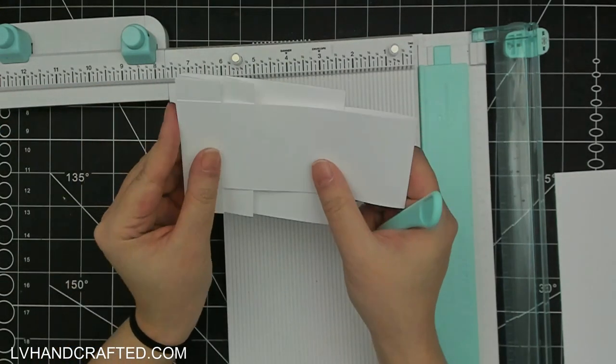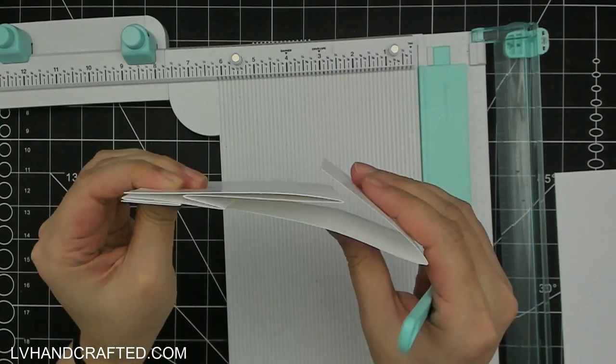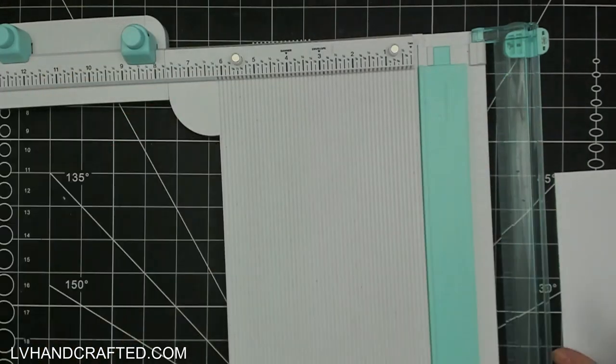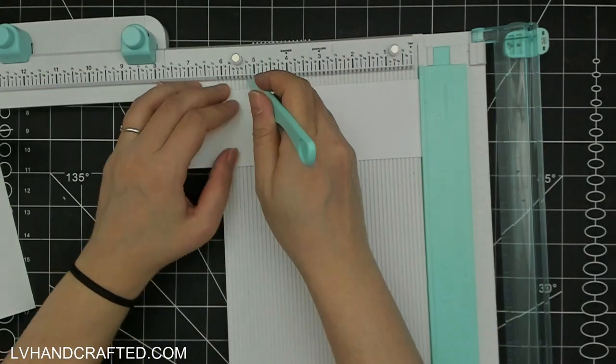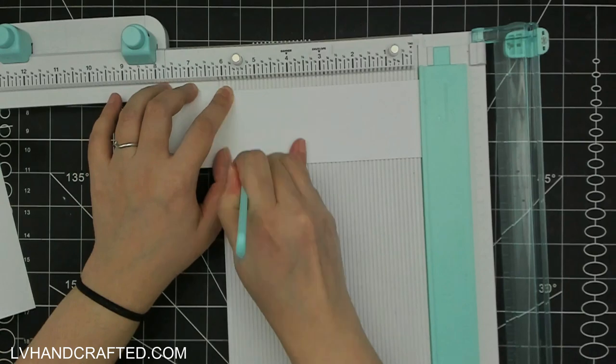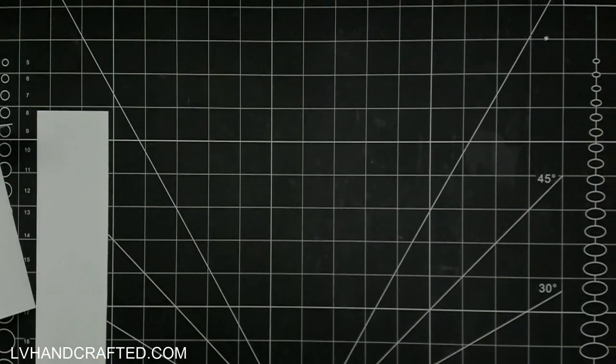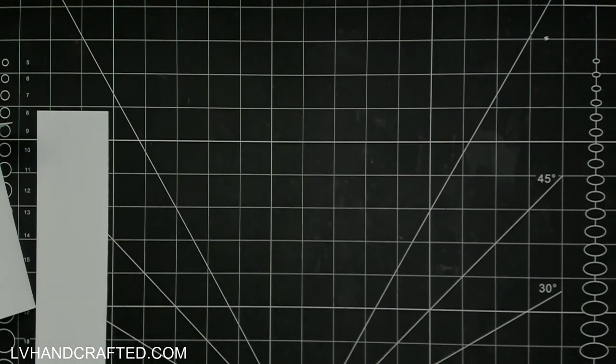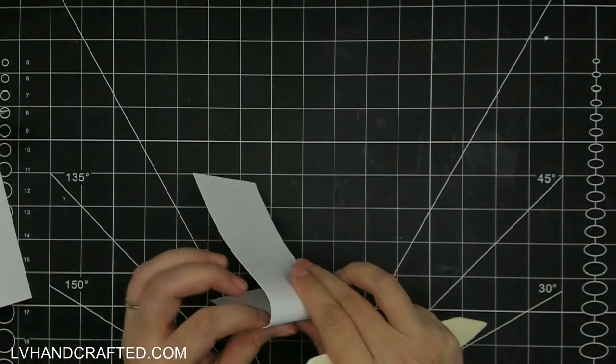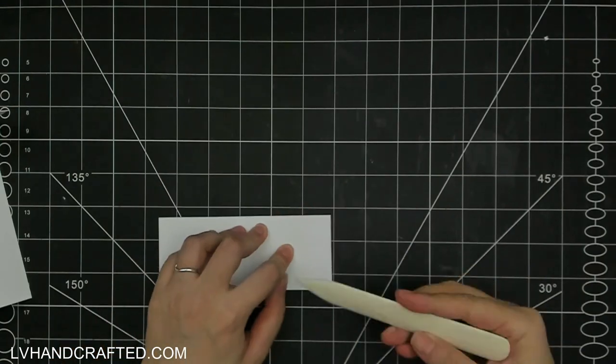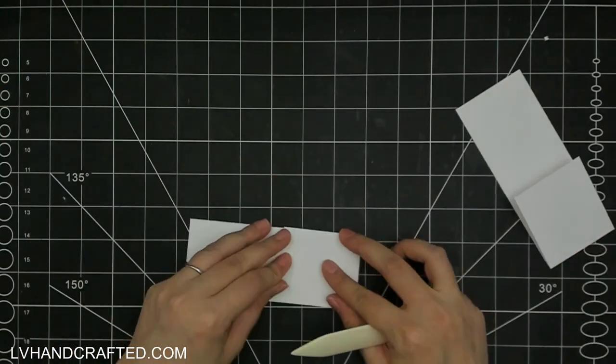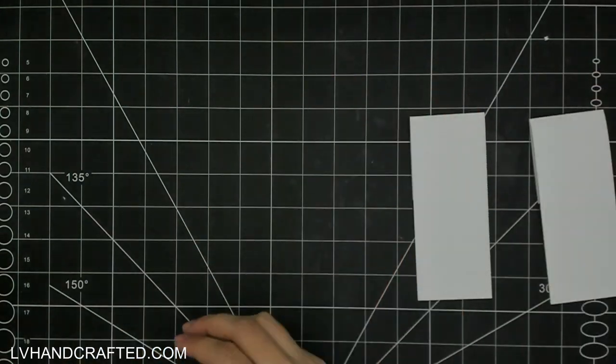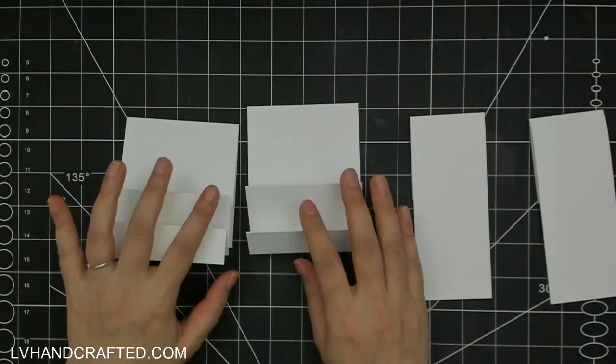And basically all I did was just scored it at the top one time at the height of the card base that I'm creating. So my mini slimline, I like to make them three and a half wide by five and a half tall. So on that second strip I just scored at five and a half. And I've got a little bit left over that will overlap with the stepper portion so that we can attach this to our stepper.